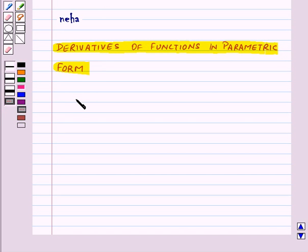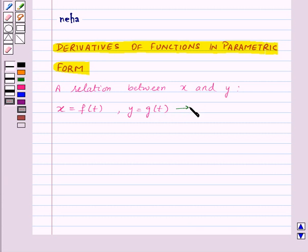First of all, let us learn what is parametric form. A relation expressed between two variables x and y in the form x equals f of t and y equals g of t is said to be the parametric form, and t is the parameter.